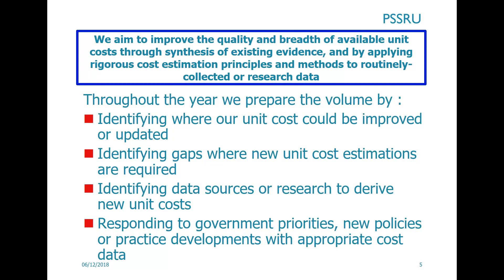At the top of this slide you'll see the aim which guides our work. In summary, this is to improve the quality and breadth of available unit costs by using existing literature and studies. We make sure that our costs are of good quality by applying established cost estimation methods and principles. Throughout the year we identify where our unit costs could be improved and also identify gaps in information and data sources so that we can calculate new costs. It's also very important to us that we respond to government priorities and policies with appropriate cost data.